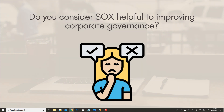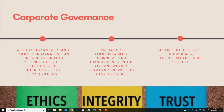What is corporate governance? Corporate governance is a set of processes and policies that manage an organization with ethics to safeguard the interests of its stakeholders. If you look at all the policies and procedures a company has that are intended to safeguard stakeholder interests, we consider that to be corporate governance. They promote accountability, fairness, and transparency in the organization's relationship with its stakeholders, and they align the interests of individuals, corporations, and society.